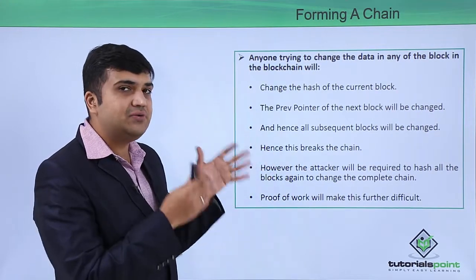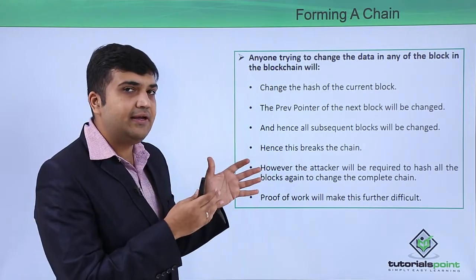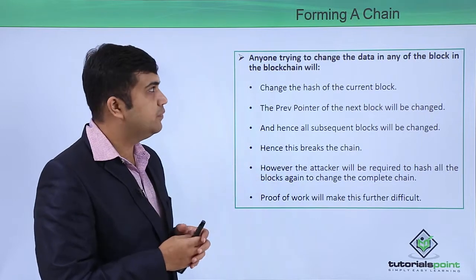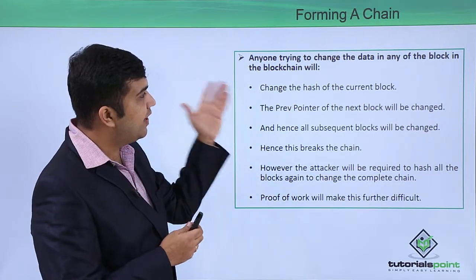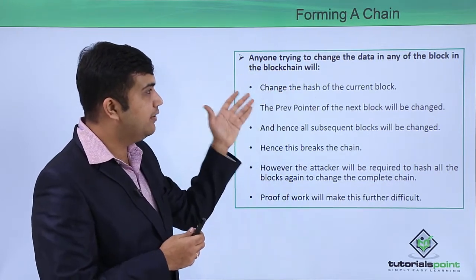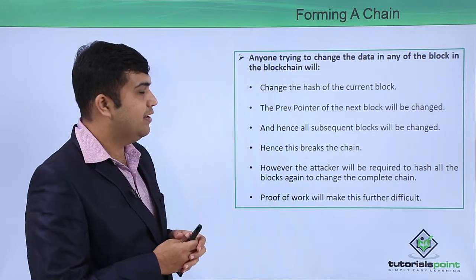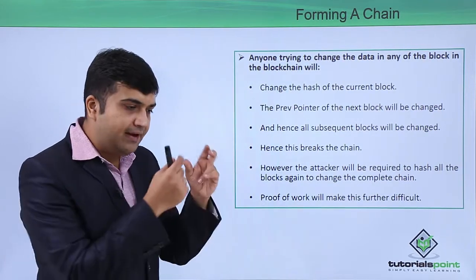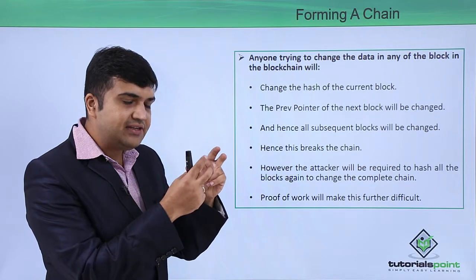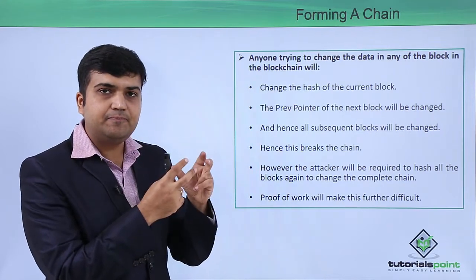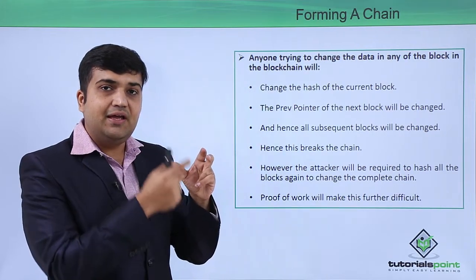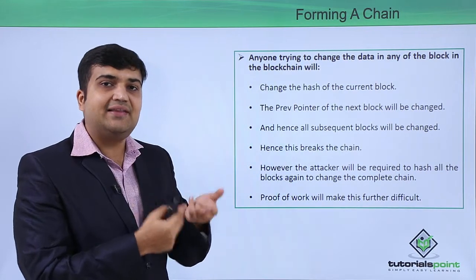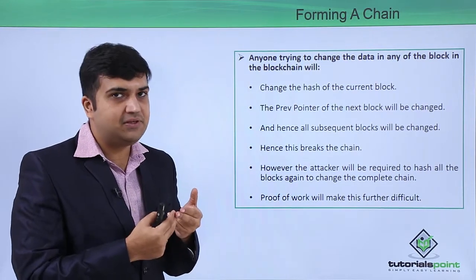Let's try to see the integrity of this chain of blockchain. Let's say any intruder tries to change some data in the blockchain. In that case, the intruder will have to first change the data of the current block. If the data is changed, then the hash value of that block will be changed.